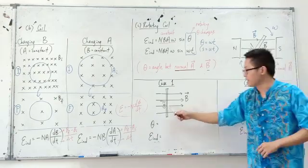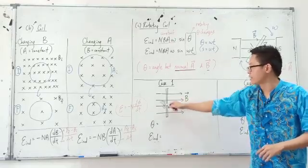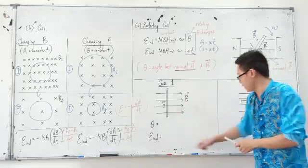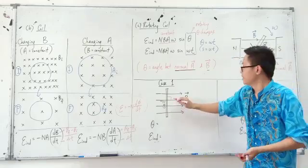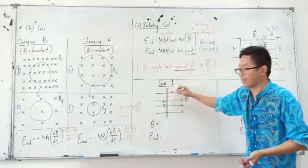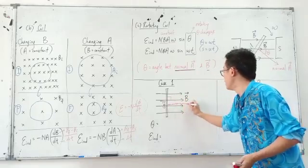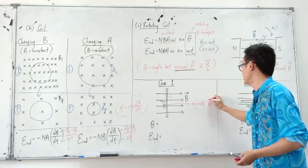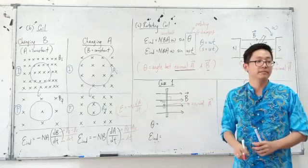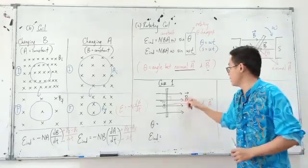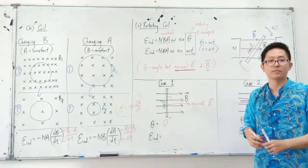There are two cases here. In the first case, the coil and the magnetic field appear to be at 90 degrees — but that is not theta. You must draw the normal first. The normal with the magnetic field, in this case, they are parallel — so it is 0 degrees when parallel. Between the normal and the magnetic field is 0 degrees, same as in chapter 4 when you found the torque or the magnetic flux.